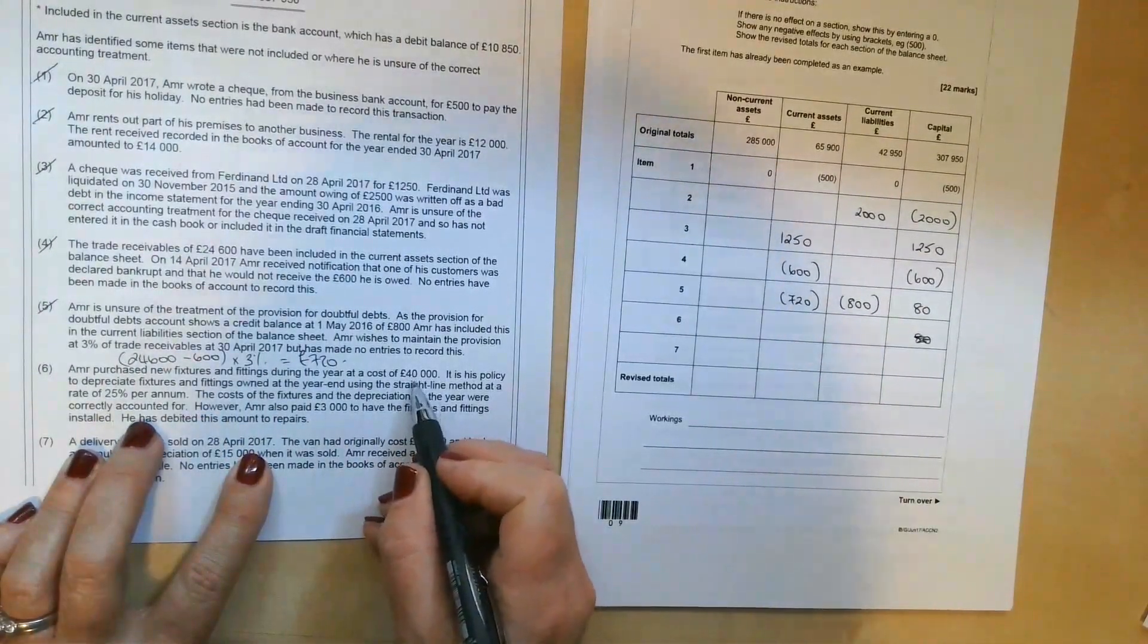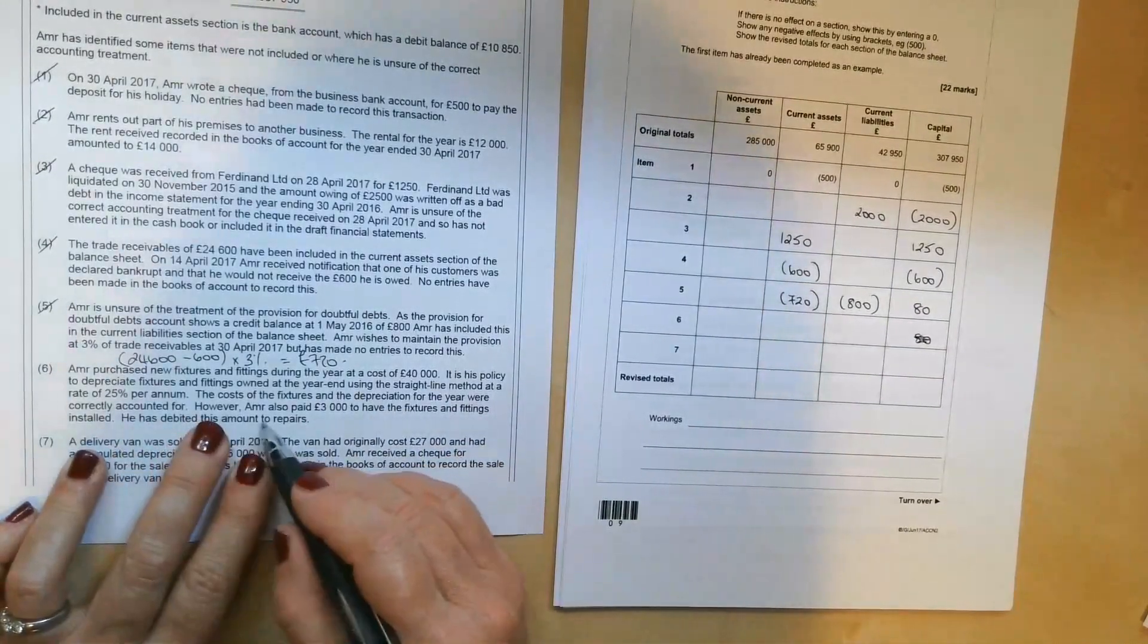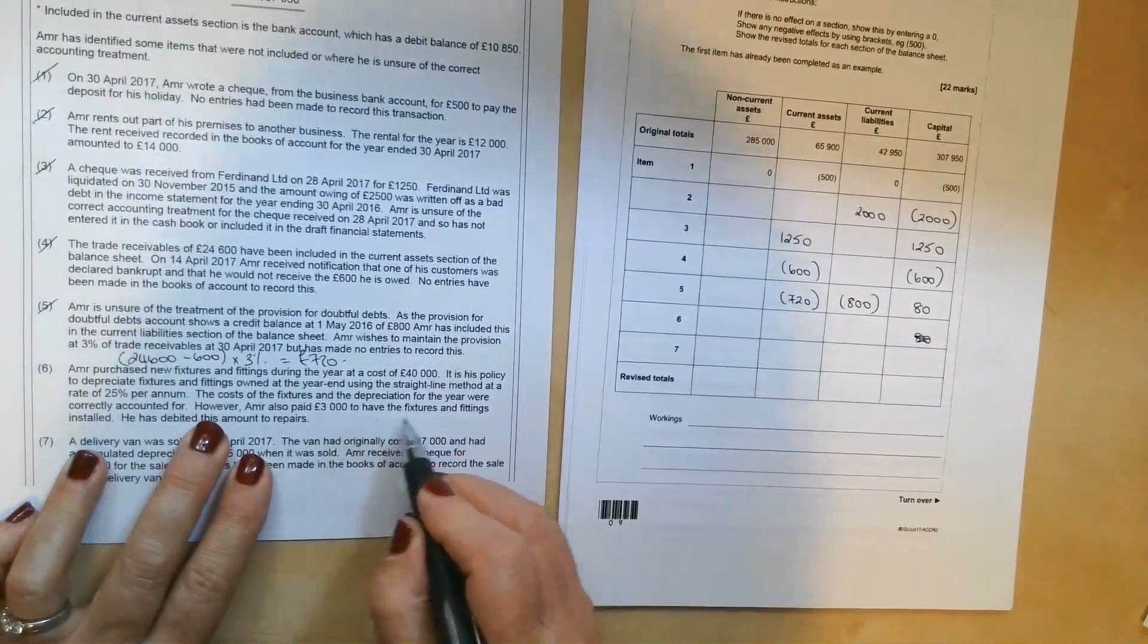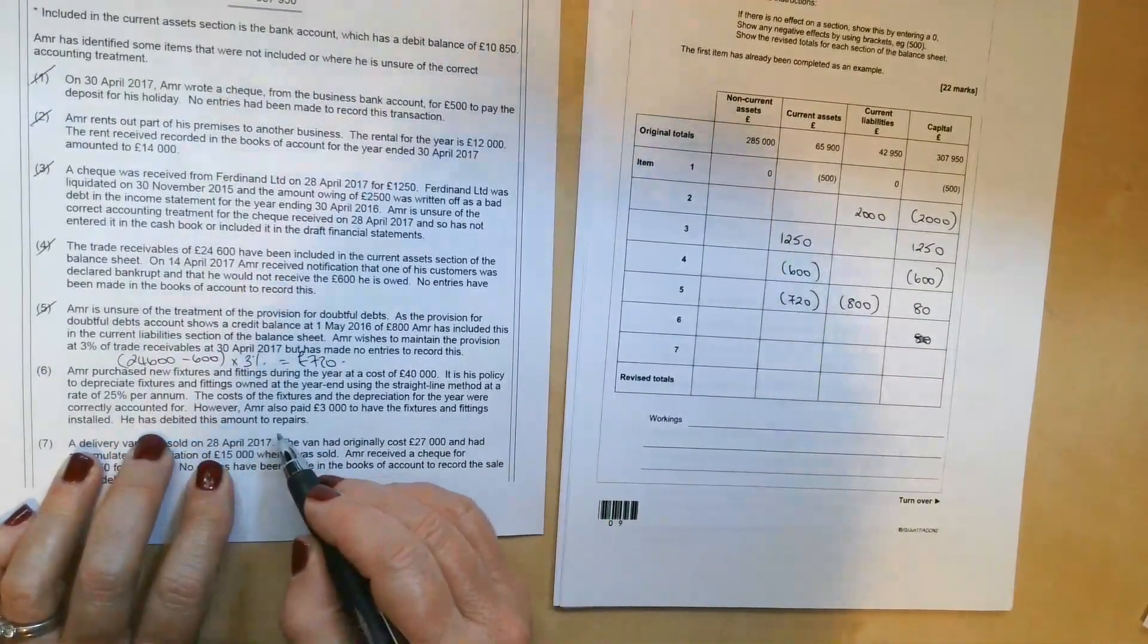So he's dealt with that £40,000. That's gone to the right place. And he's already done the depreciation on that. However, Amir also paid £3,000 to have the fixtures and fittings installed. He has debited this amount to repairs.